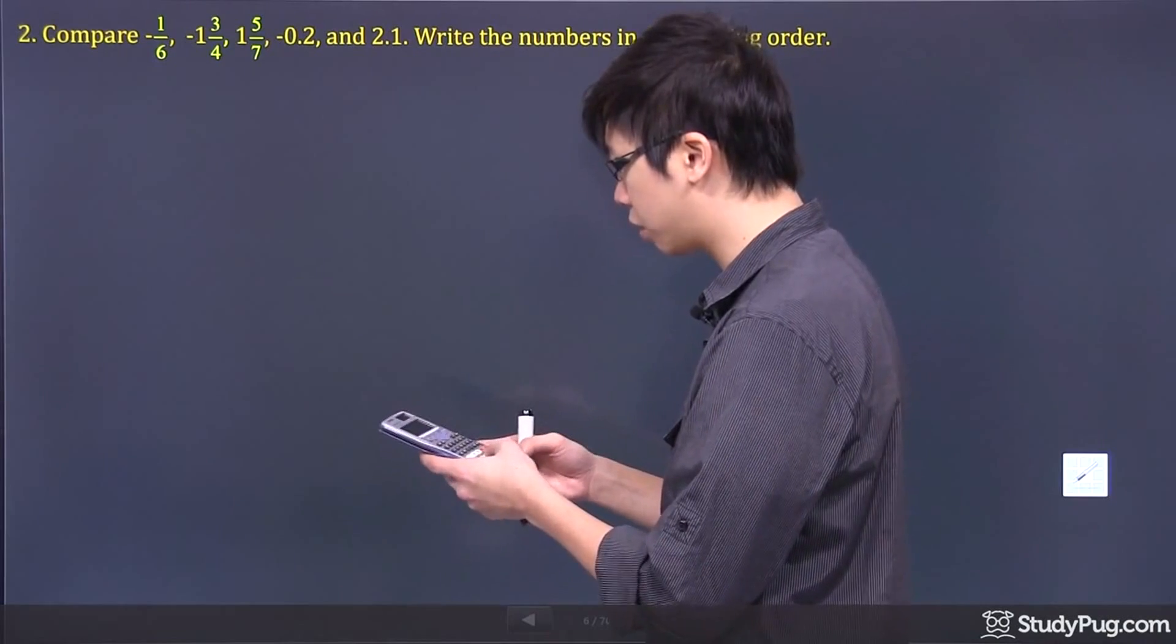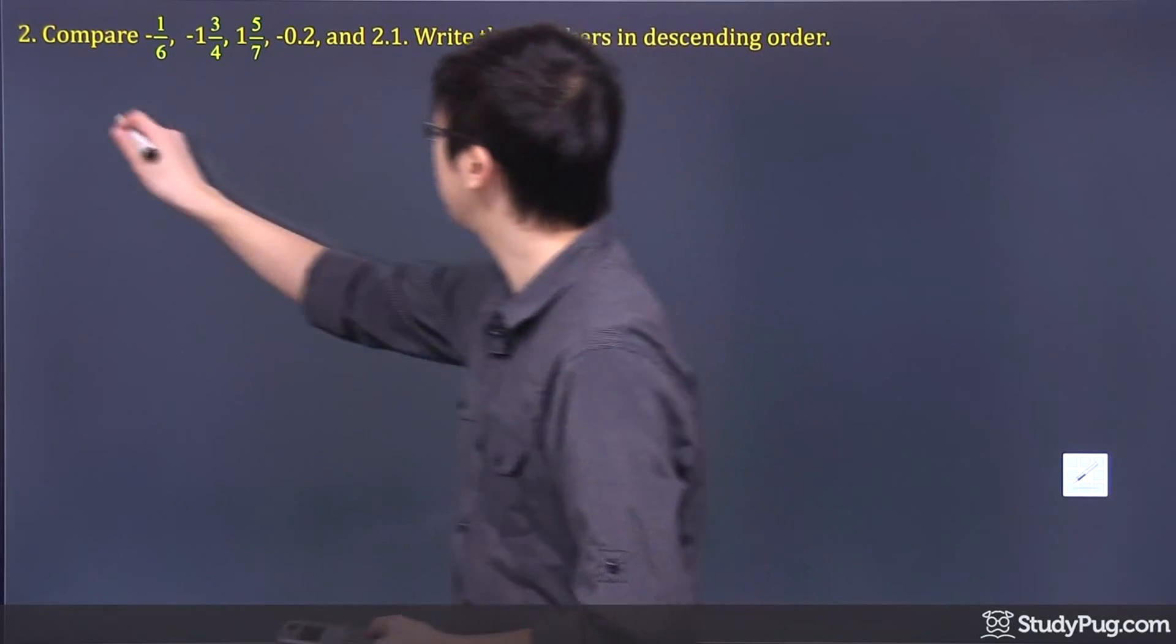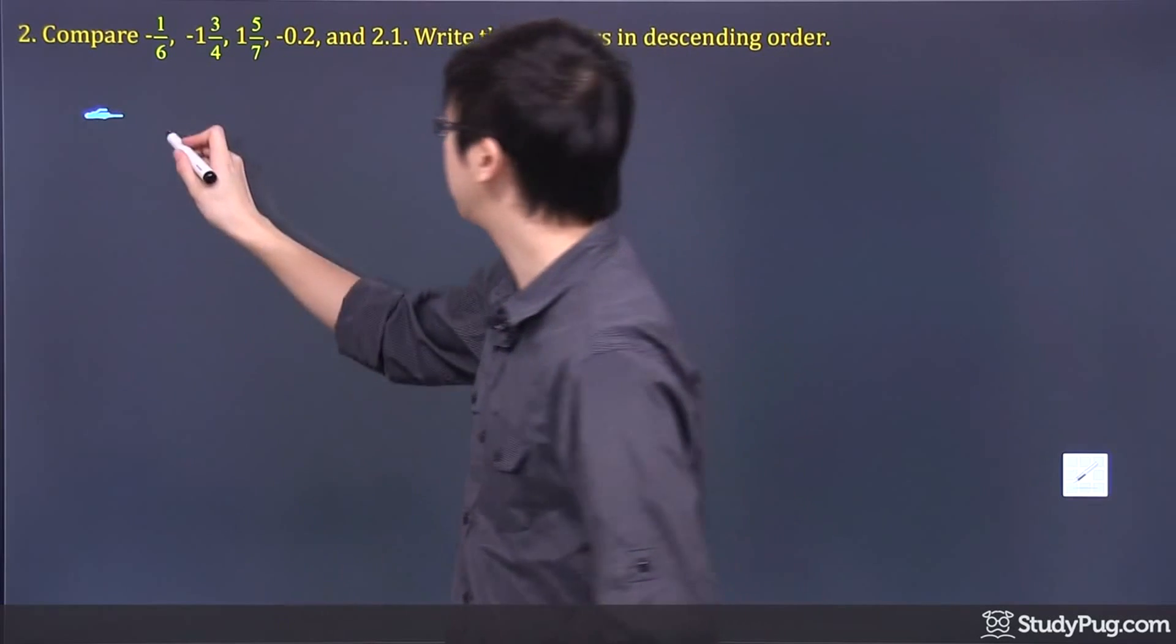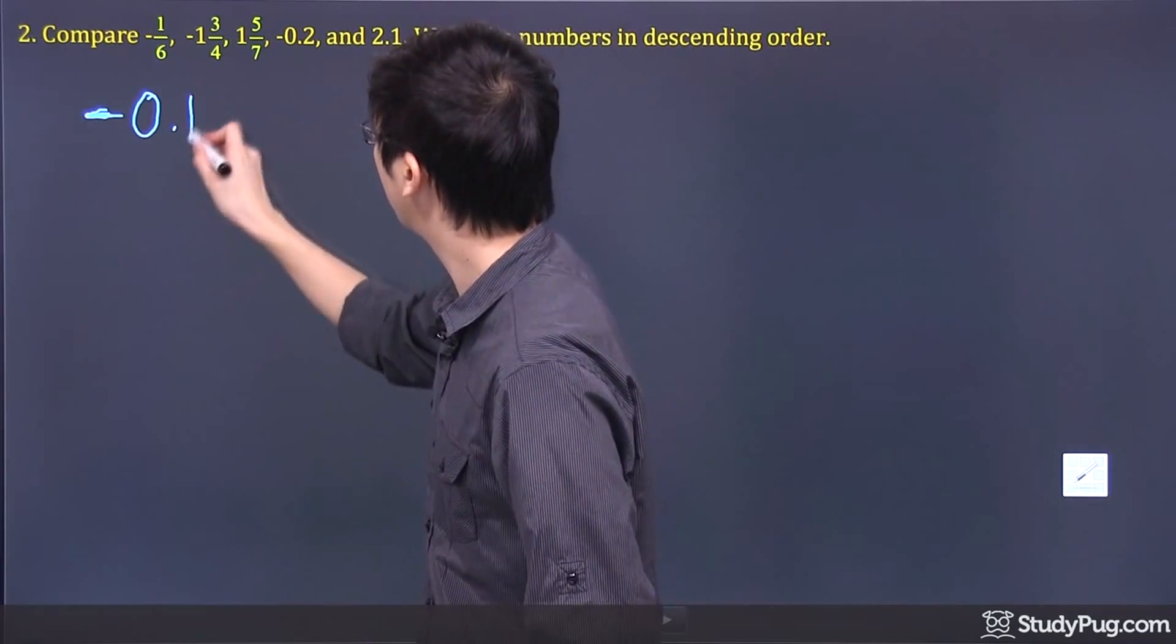So if I go 1 over 6 on the first one, what we have on the first one is actually a negative. Here's my negative. We got negative 0.17.